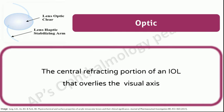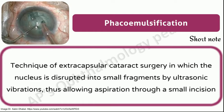Optic: the central refracting portion of an IOL that overlies the visual axis. Examiners often ask the materials used in IOLs. Rigid IOLs are made of PMMA (polymethyl methacrylate) and foldable IOLs are made of silicone, acrylic hydrophobic, and acrylic hydrophilic materials. Phacoemulsification: technique of extracapsular cataract surgery in which the nucleus is disrupted into small fragments by ultrasonic vibrations, allowing aspiration through a small incision of approximately 2.5 to 3 millimeters, resulting in very little astigmatism. Examiners often ask what type of energy is used in phaco — the answer is ultrasound energy.